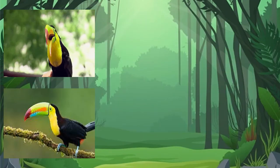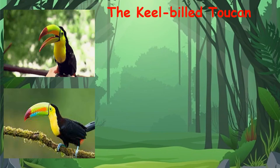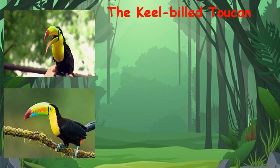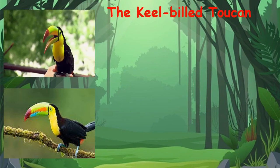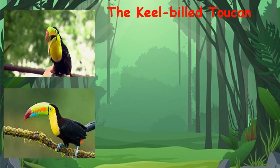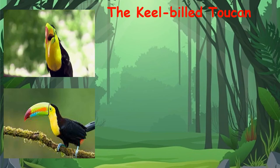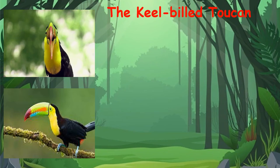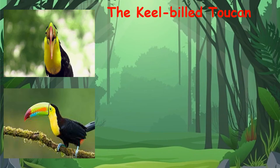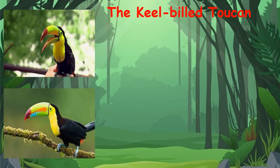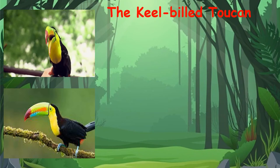So this is the keel-billed toucan. This is the keel-billed toucan. And what colors do you see on this toucan? I can see black, I can see yellow, I can see a bit of green, I can see a bit of orange, I see a bit of blue and also I see a bit of purple and red.